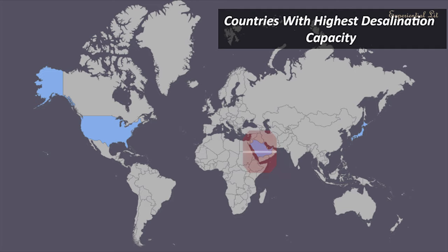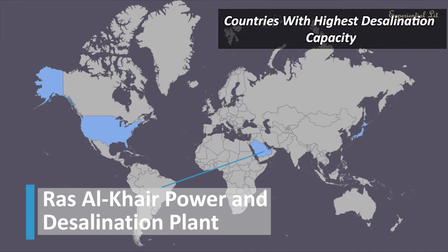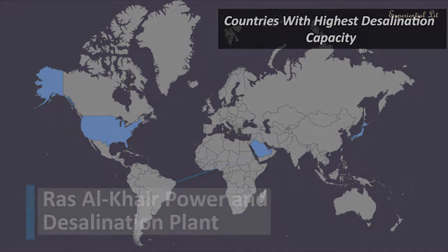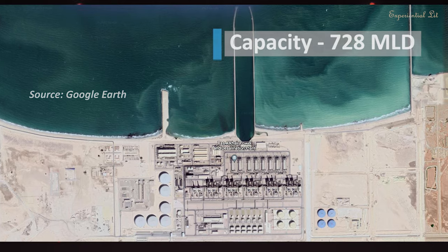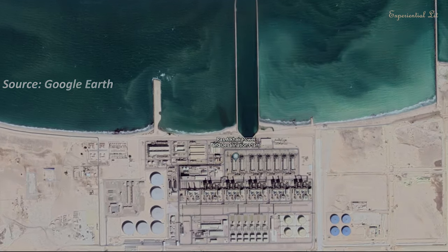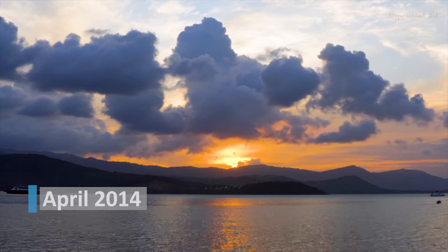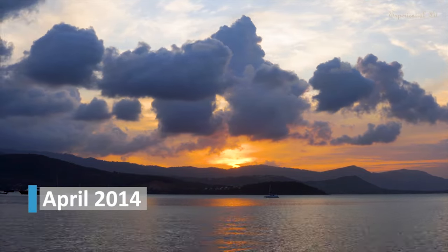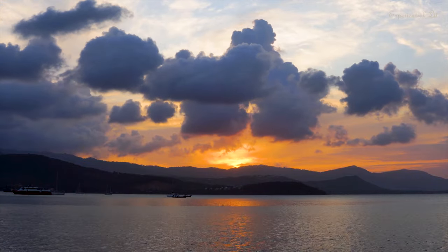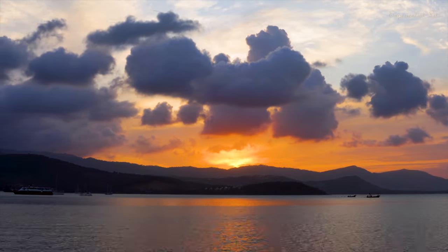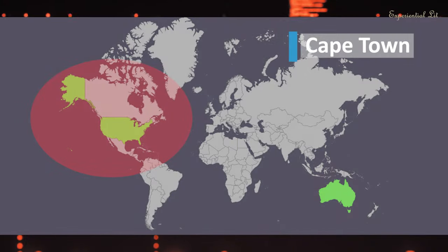The Middle East is home to over 70% of these plants. The biggest plant in the world can be found in Saudi Arabia — the Ras Al-Khair Power and Desalination Plant — with a capacity to produce 728 million liters per day. It began operation in April 2014 and won the Global Water Awards Desalination Plant of the Year in 2015, followed by other notable plants in countries like Australia and the United States. So have we solved the water crisis?